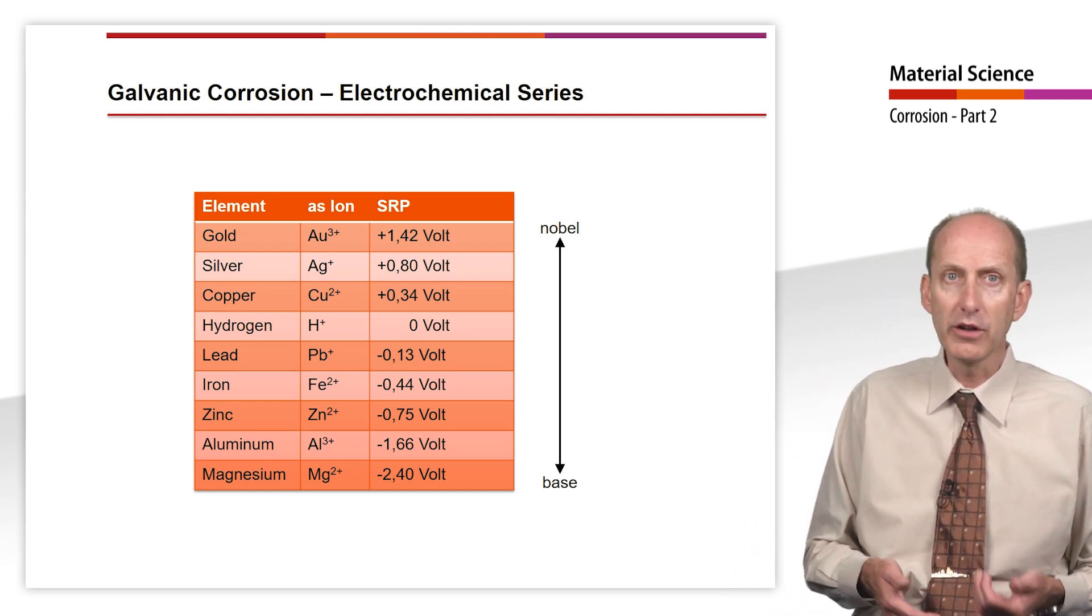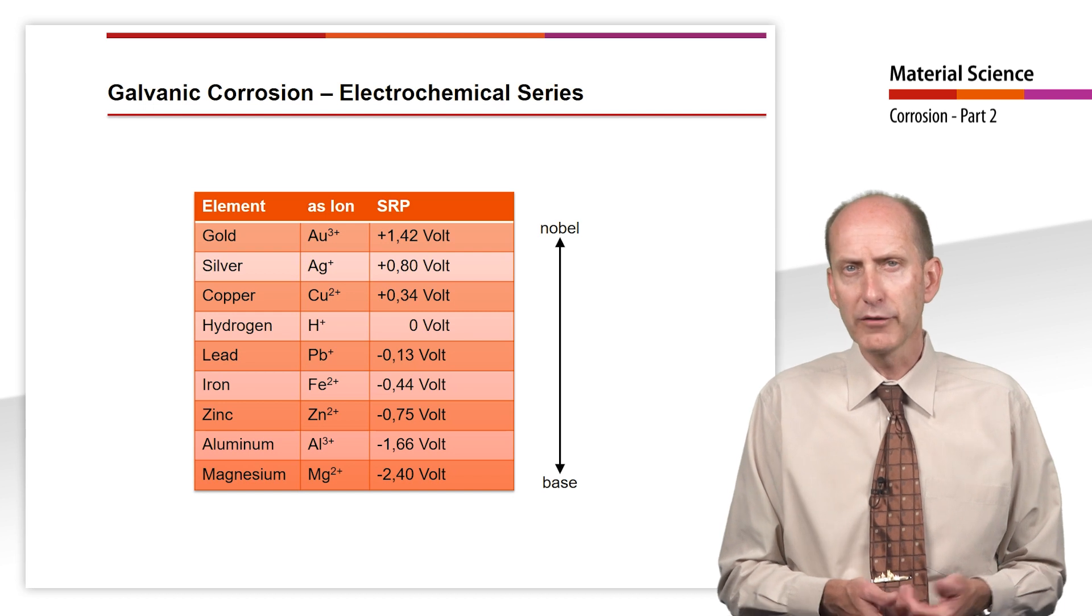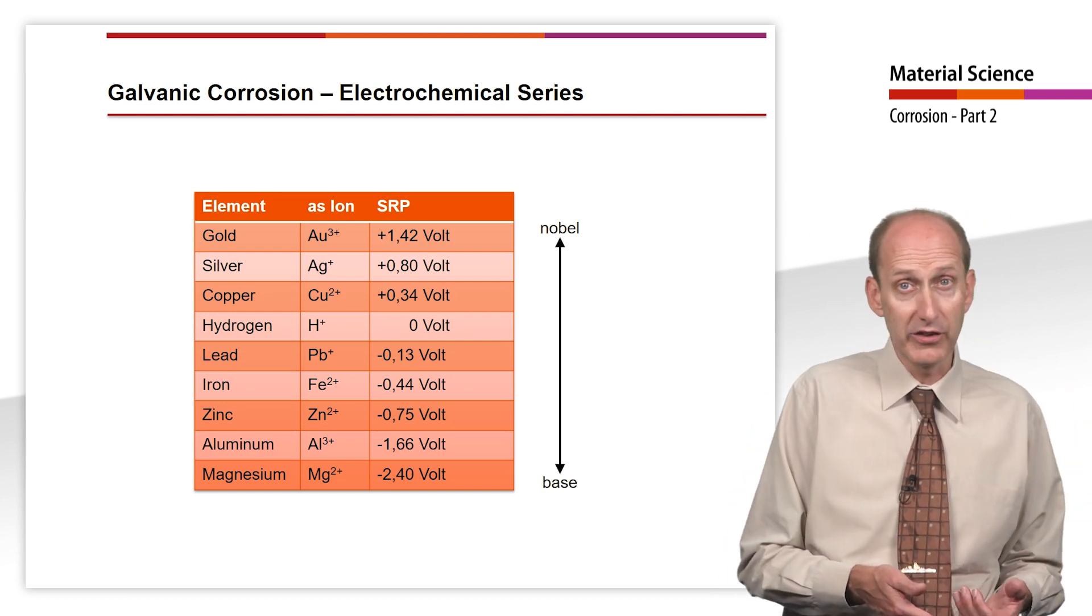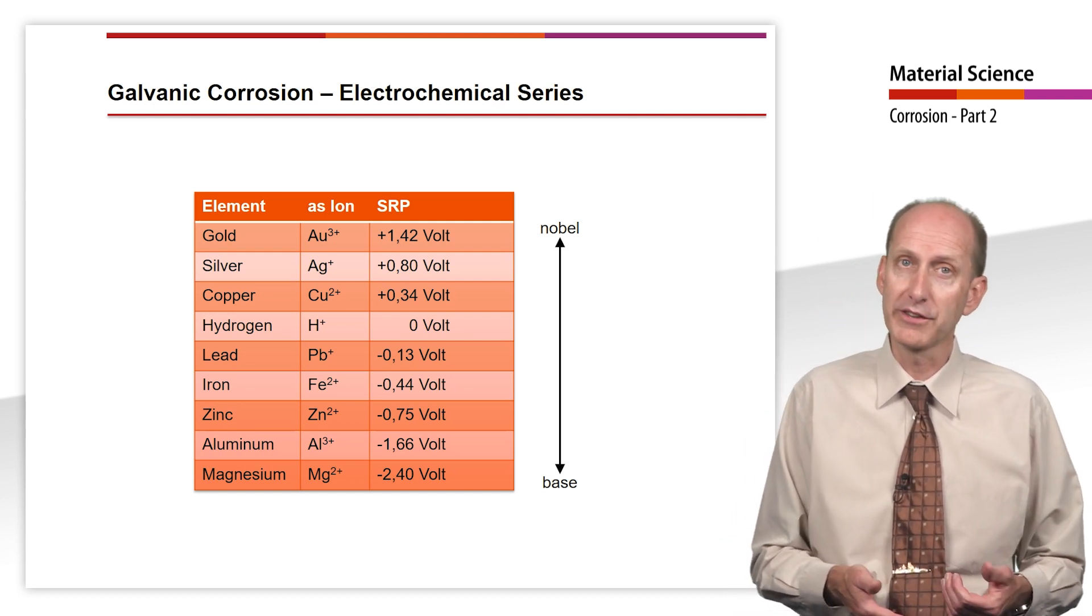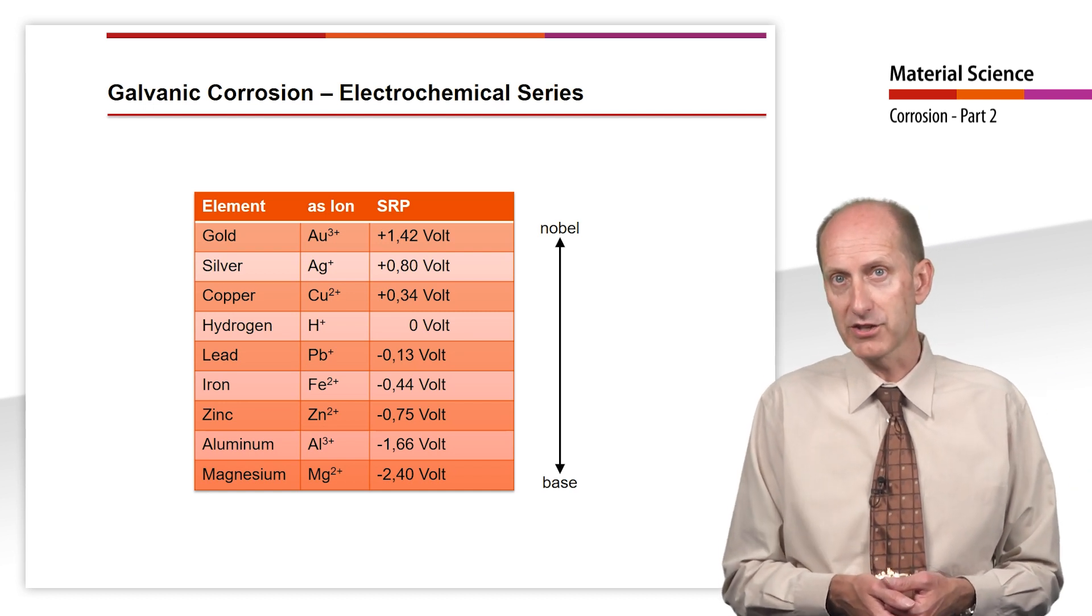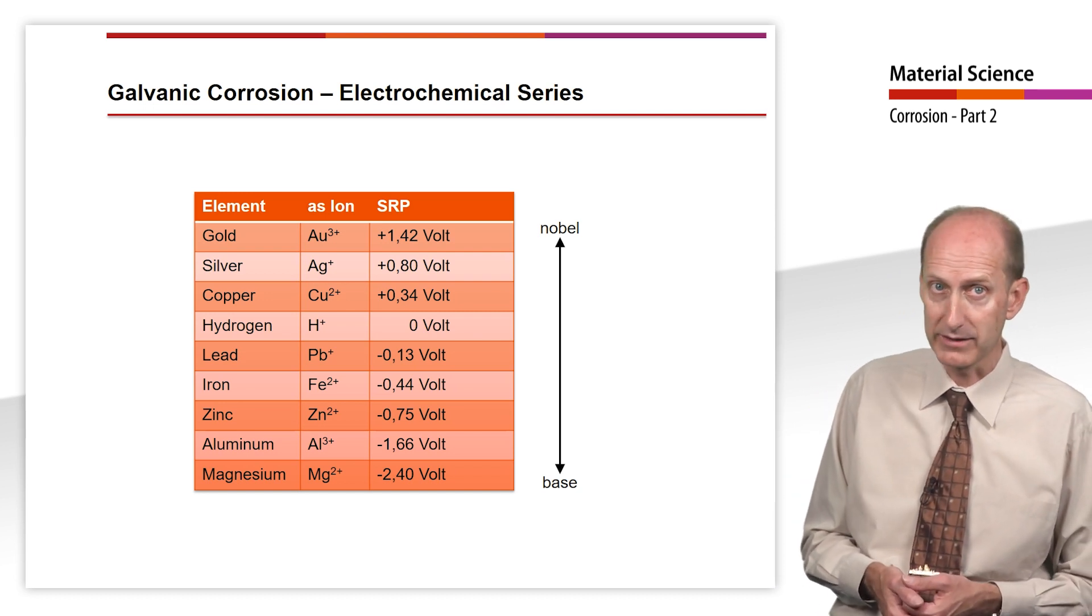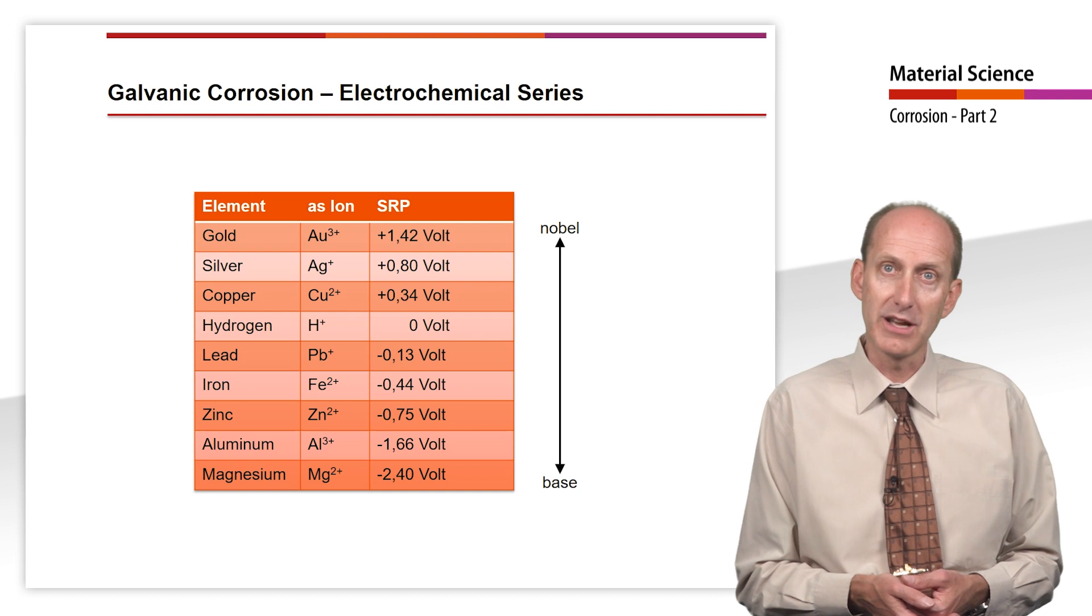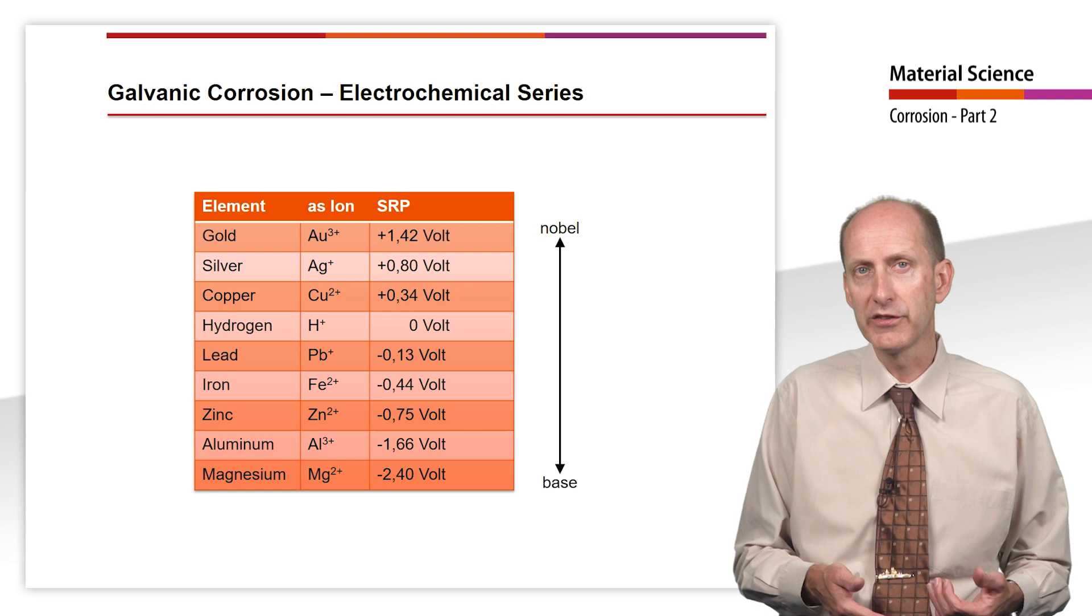The values for all common metallic materials can be found in good textbooks. I have compiled some important values for us here. As we can see, different voltages can be generated with different conductors. All metals with a positive standard reduction potential are called noble metals, and all metals with a negative standard reduction potential are called base metals.